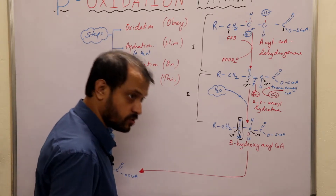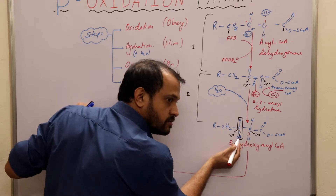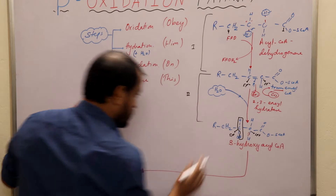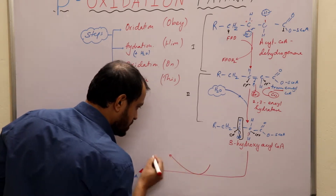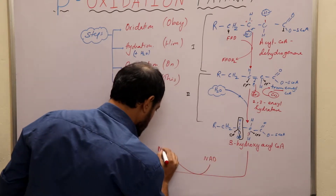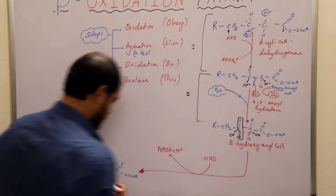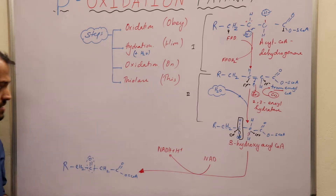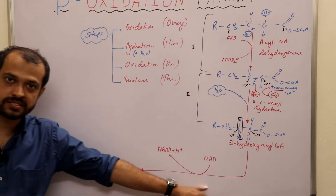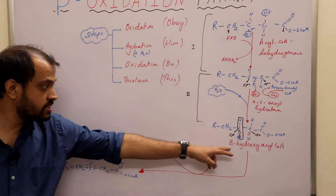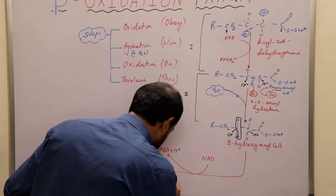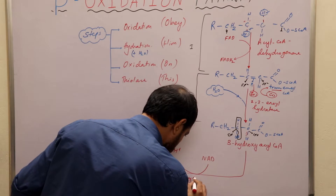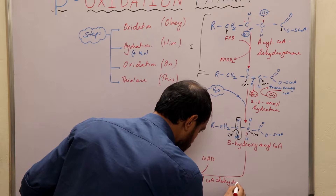These two hydrogens have very high energy because this hydrogen is associated with oxygen, making it polar. That is why we need a much stronger reducing agent — NAD. The enzyme used here is 3-hydroxyacyl-CoA dehydrogenase.